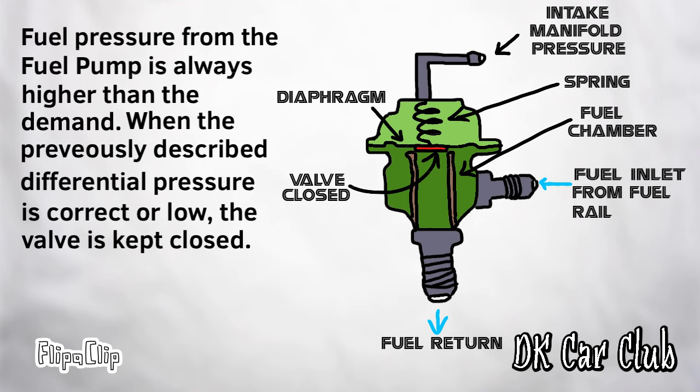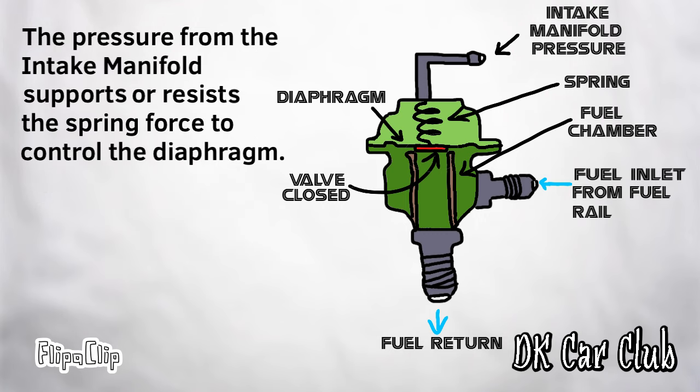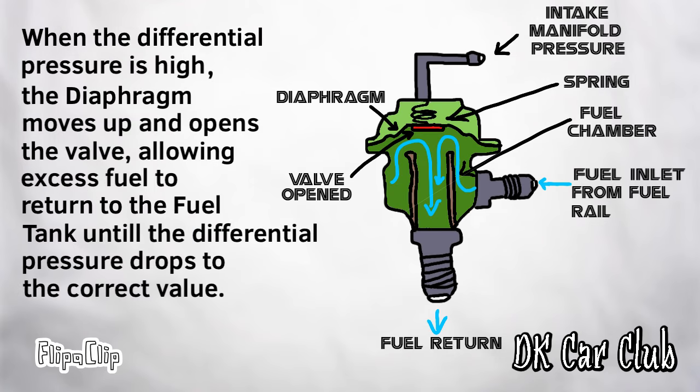Fuel pressure from the fuel pump is always higher than the demand. When the differential pressure is correct or low, the valve is kept closed. The pressure from the intake manifold supports or resists the spring force to control the diaphragm. When the differential pressure is high, the diaphragm moves up and opens the valve, allowing excess fuel to return to the fuel tank until the differential pressure drops to the correct value.